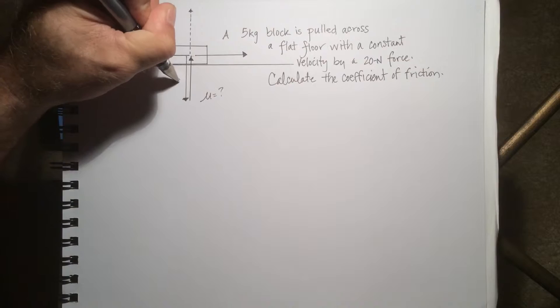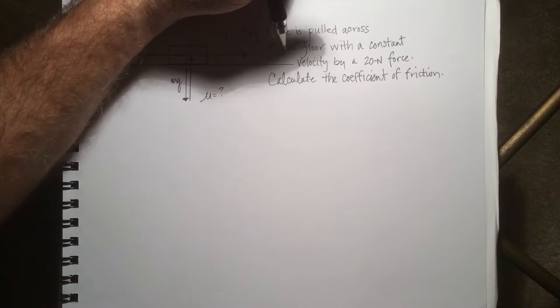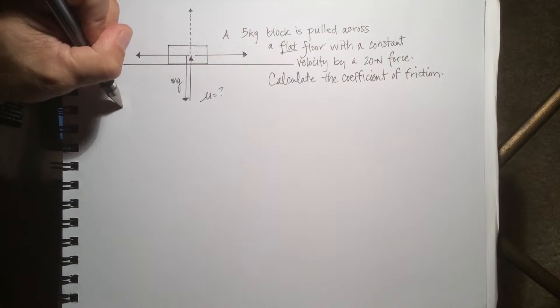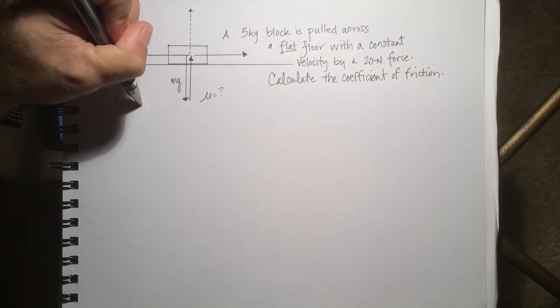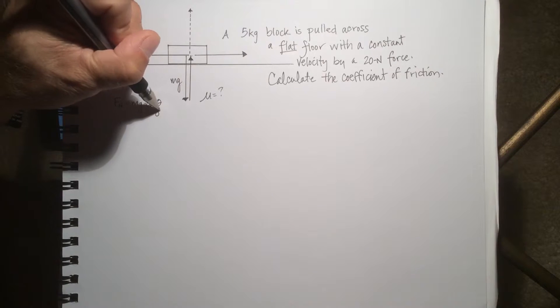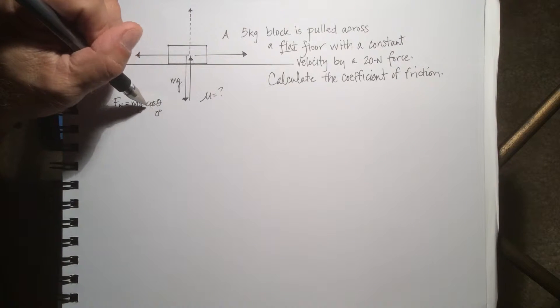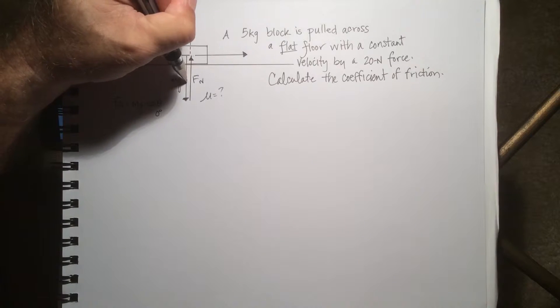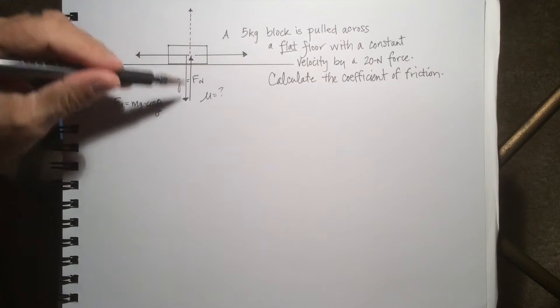Straight down is mg. Since we're on a flat surface, the normal force is mg times cosine theta. Theta is 0 at this point. Cosine of 0 is 1, so the normal force is equal to mg but in the opposite direction.